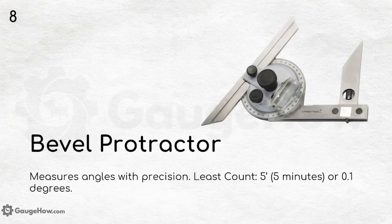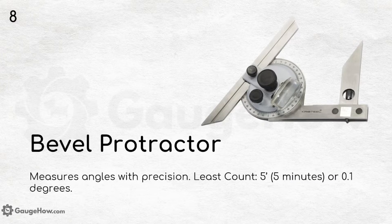Bevel protractor. This protractor is so precise that it measures any angle with high accuracy, making it widely used in many industries. It measures angles with a least count of 5 minutes or 0.1 degree, which illustrates its precision.